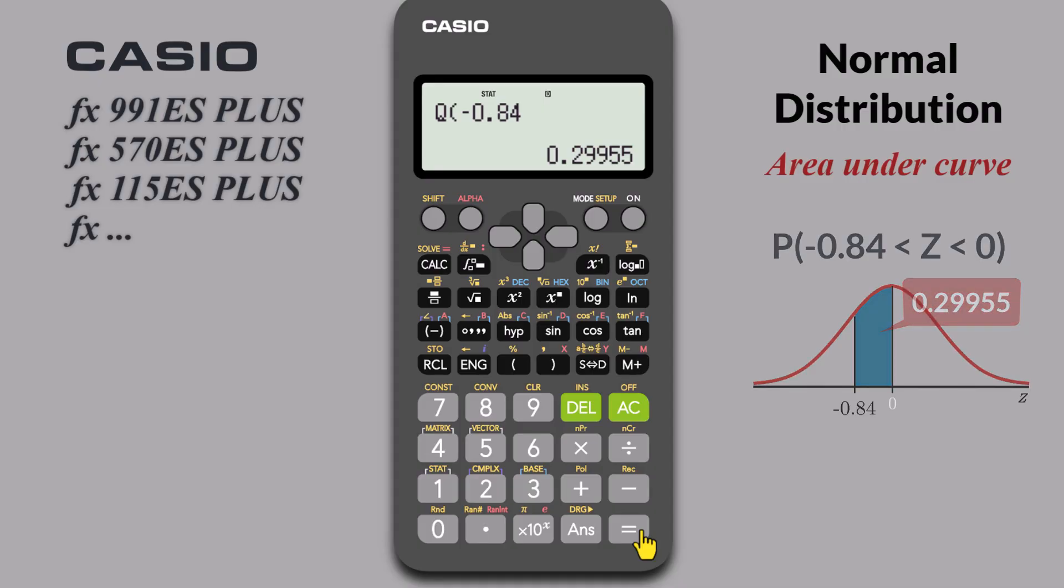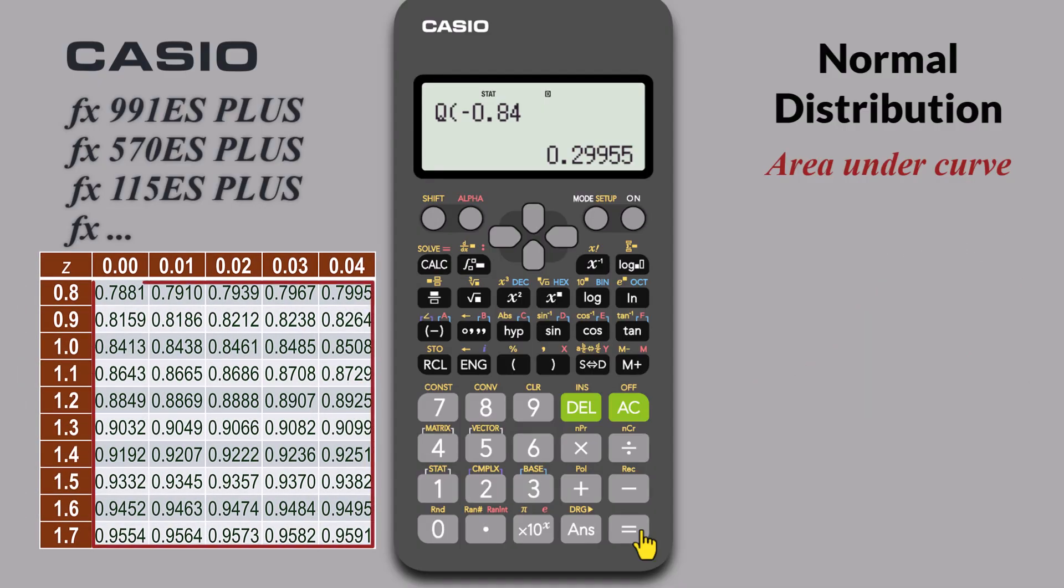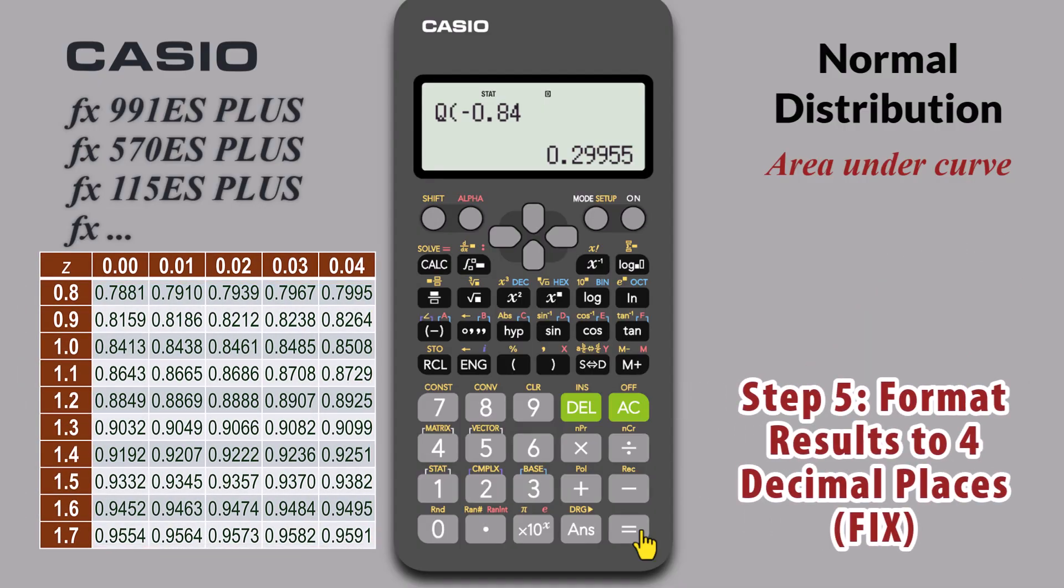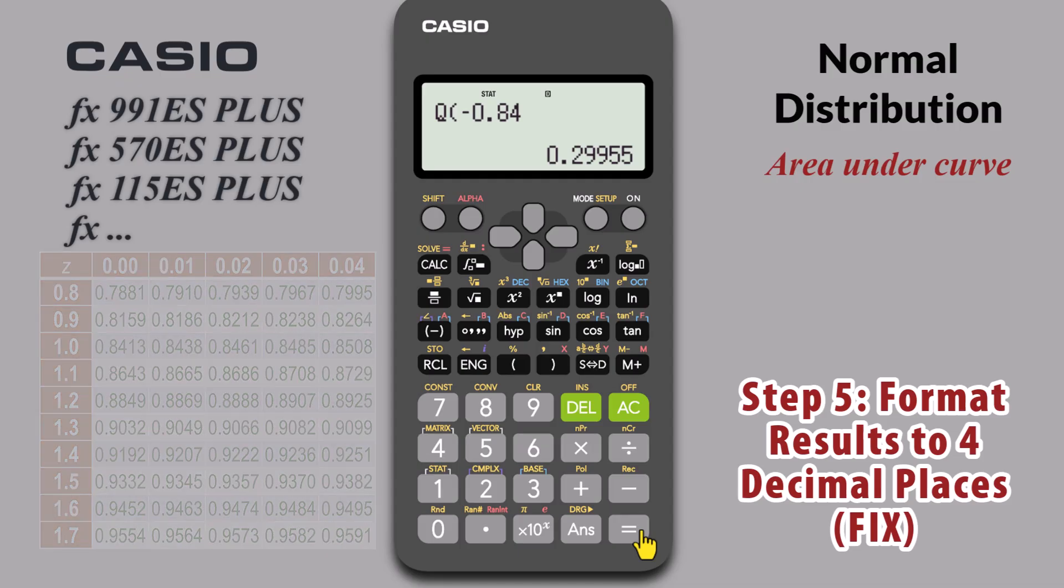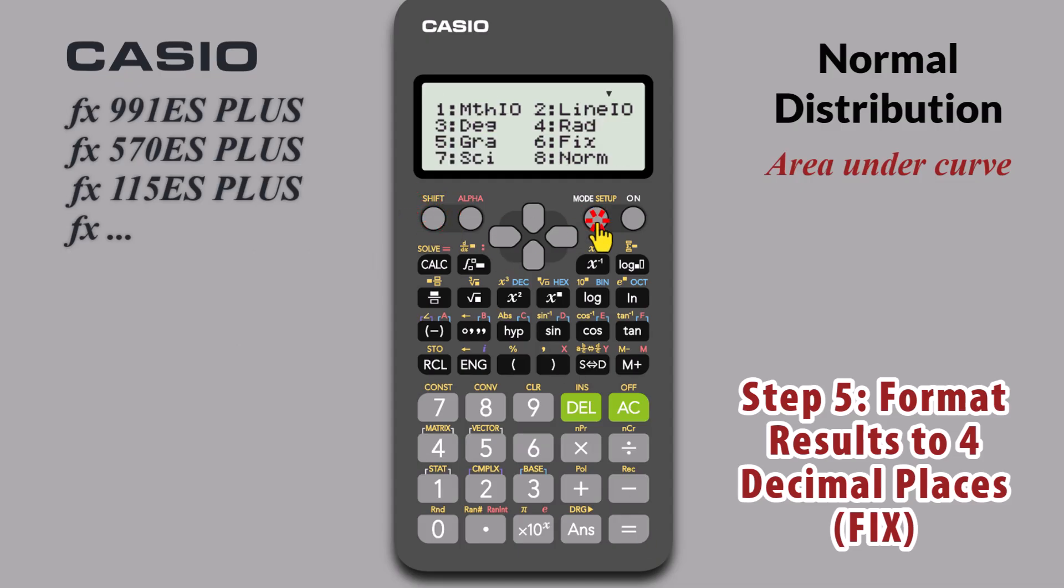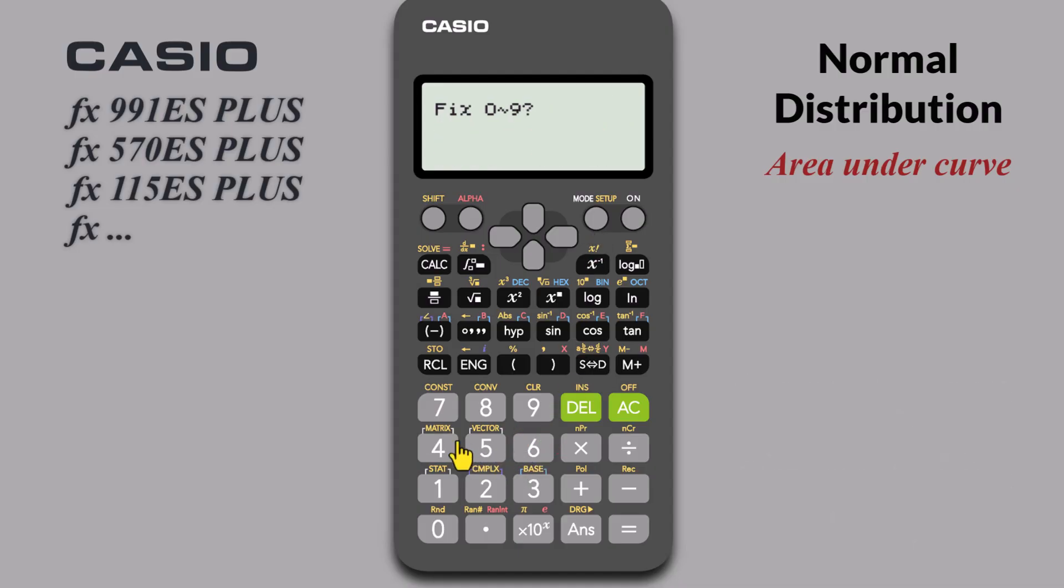Statistical tables typically show probabilities to 4 decimal places. So let's format our results to match this. Press SHIFT-1 for Setup. Since we want 4 decimal places, enter 4. Now when you recompute any probability, for example P of 1.04 again, the result is neatly displayed as 0.8508 with exactly 4 decimal places.